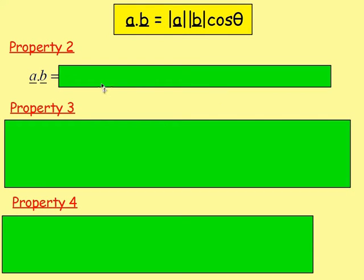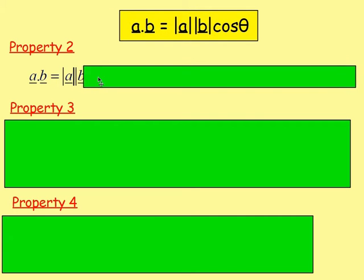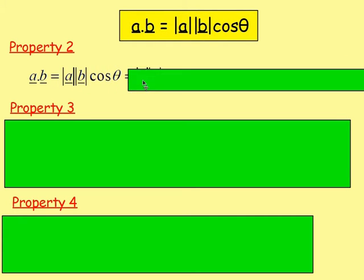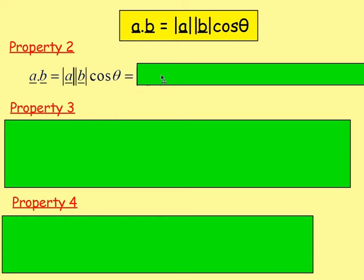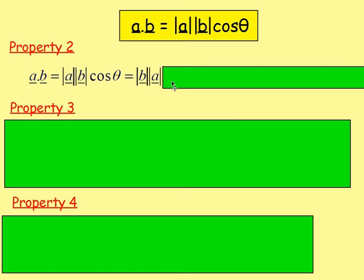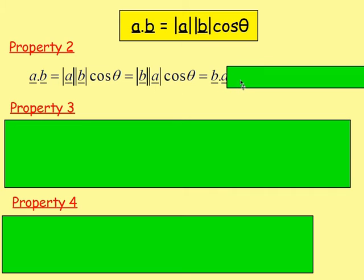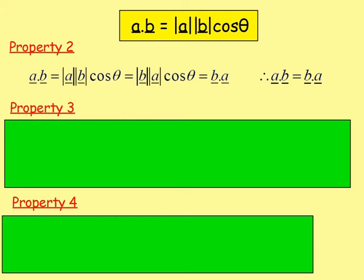Property two: A dot B equals the magnitude of A times magnitude of B times cos theta. When multiplying, 7 times 8 is the same as 8 times 7, so the magnitude of A times magnitude of B can also be written as magnitude of B times magnitude of A times cos theta. That means B dot A gives the same result. In other words, A dot B is exactly the same as B dot A.